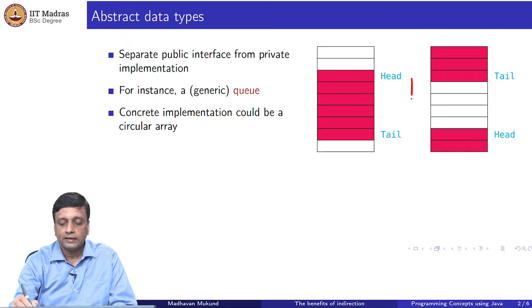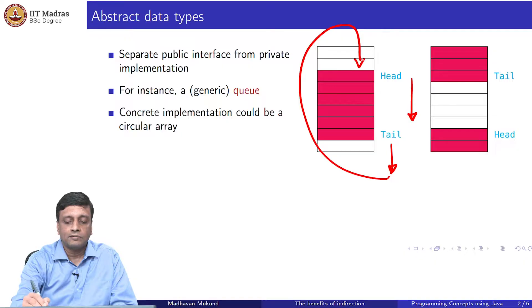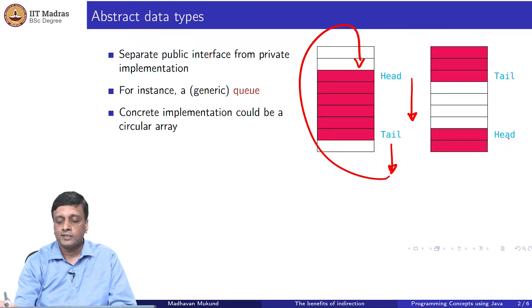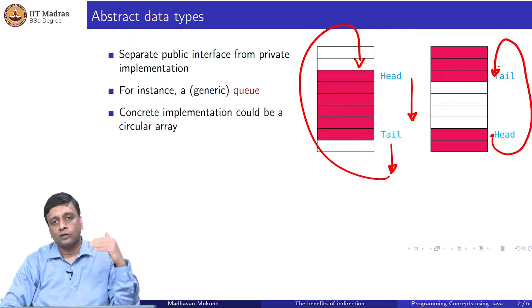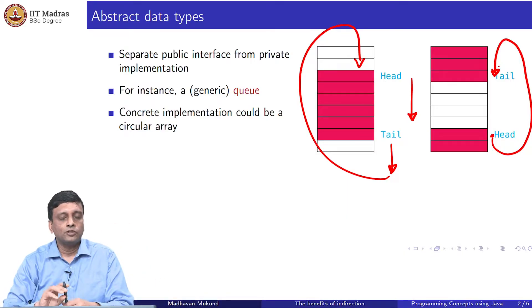What will happen over time is that the head will move down and the tail will go beyond the boundary and then this is where the circularity comes in, it wraps around. Here is a situation where the queue starts at the bottom and actually continues to the top. This is a circular array implementation of a queue. As we move the head down, we walk down the array and then as the tail moves down, if it reaches the end, it goes back to the top. This is one concrete way of implementing that.